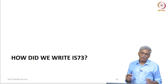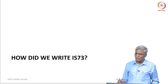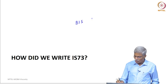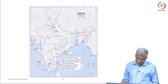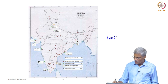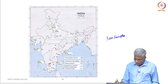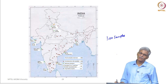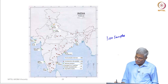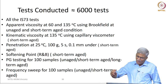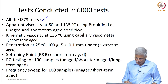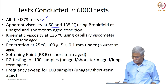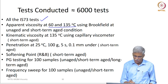I will use this opportunity to explain how IIT Madras wrote IS 73. This was based on generous funding provided by the Bureau of Indian Standards. We collected 300 samples across the country — construction site samples, refinery samples, samples used before modification, and imported samples — and ran around 6000 tests on these samples. All IS 73 tests were conducted, and we also ran tests at 60 and 135 degree centigrade using a rotational viscometer in unaged and short-term aged conditions.